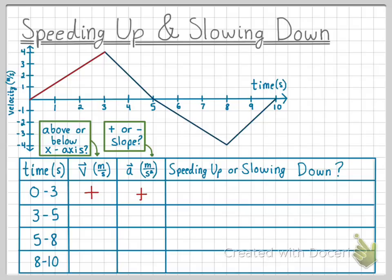Now let's look to see if the object is speeding up or slowing down for this section of the graph. The velocity starts at 0 meters per second, also known as rest, and increases all the way to 4 meters per second. This increase in velocity from 0 to 4 meters per second suggests that the object is speeding up.